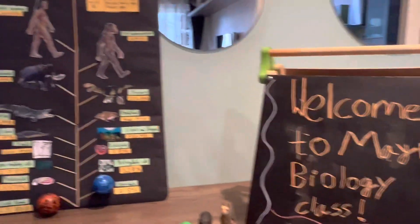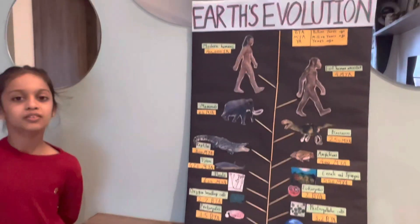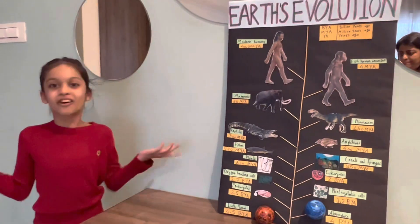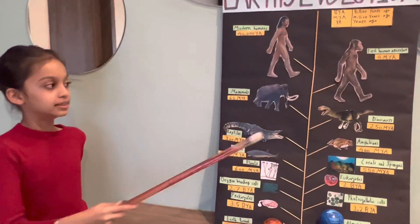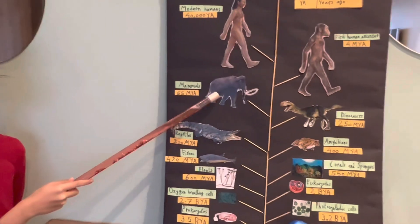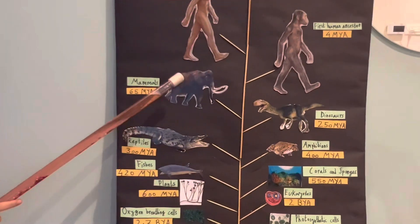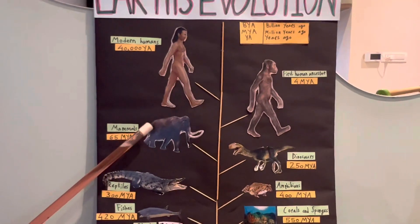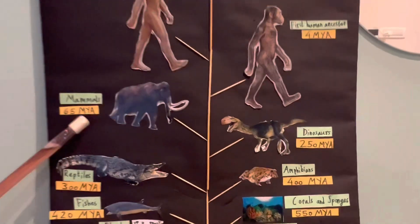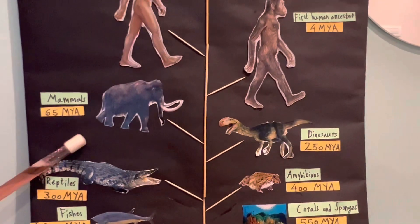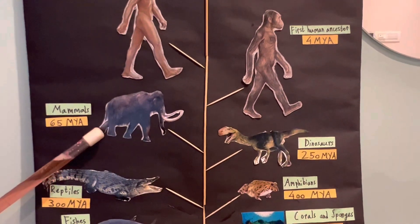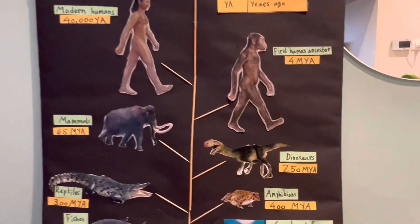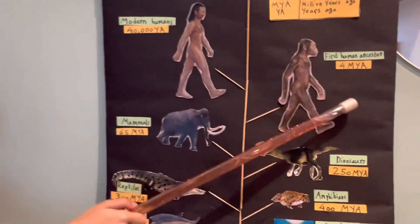And do you know how dinosaurs got extinct? Well, that's another story — we'll talk about it later. Then came the mammals, one of the most developed organisms in the evolution of Earth. Mammals came 65 million years ago. And then came the first human ancestor, 4 million years ago.